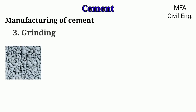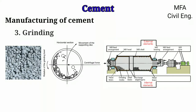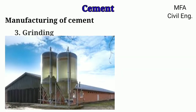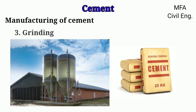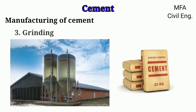The clinker from the rotary kiln is finally ground in a ball mill and tube mill. While grinding, gypsum of about 3 to 4 percent is added to control the initial setting time of cement. Addition of gypsum is necessary; otherwise the cement can set instantly when water is added. The ground material is then stored in silos, packed in bags, and the cement is ready to use.